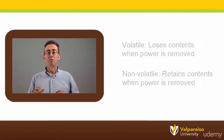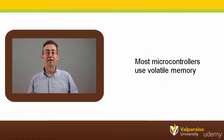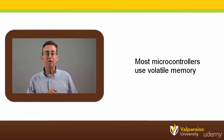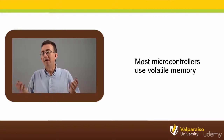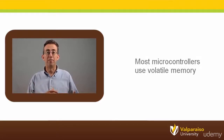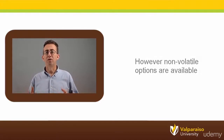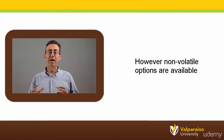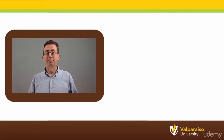Historically, most microcontrollers have used volatile data memory. For example, if a Blu-ray player is unplugged and then plugged back in again, it may not know what time it is anymore — the data for the time is lost when the player lost power. More recently, some microcontroller manufacturers have been providing options for non-volatile data memory as well.